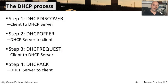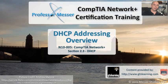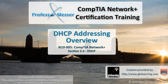This is the process that happens every time we turn on a computer and connect it to the network to get automated IP addressing: there's a DHCP discover, an offer from the DHCP server, the client requesting the offer made to it, and finally the acknowledgment from the DHCP server that it has received that request and locked in that IP address just for that device.